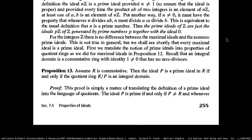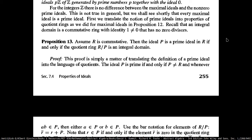The proposition is that the ideal is a prime ideal if and only if the quotient is an integral domain. If you recall what an integral domain is — a commutative ring containing the identity with no divisors — you do not have anything in the ring such that AB equals zero or BA equals zero.